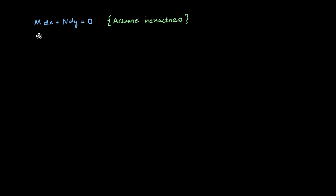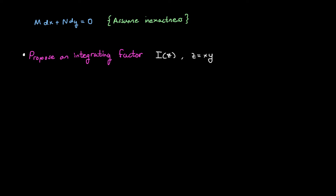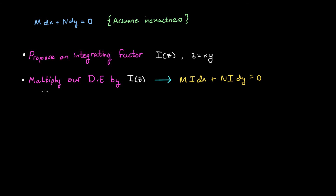We're going to begin with a general first-order differential equation of the form mentioned before, and we're going to assume inexactness. We begin by proposing an integrating factor i of z, where z is equal to x times y. It is this integrating factor that we multiply the differential equation by, giving us M times i dx plus N times i dy equals 0.